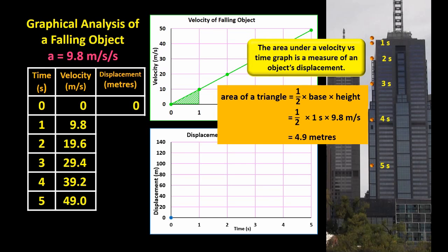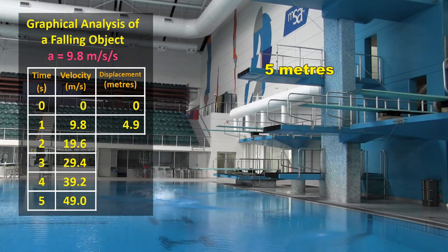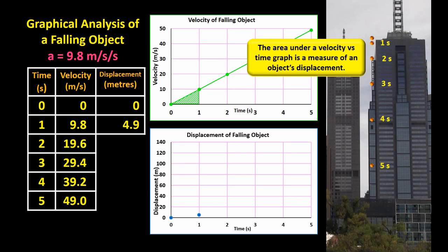After one second, the ball had fallen 4.9 meters, so I can place a dot in this position. In fact, when I jumped off the 5 meter diving platform, I hit the water in 1.02 seconds, so our graphs so far fit with reality. Which is always a good thing of course.